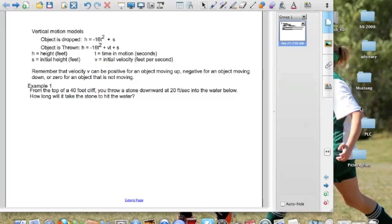So if you look at the model itself, h is equal to negative 16t squared plus vt, which is the velocity, that initial velocity is v, plus s, which is, again, the initial height.